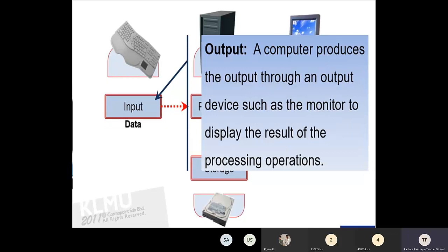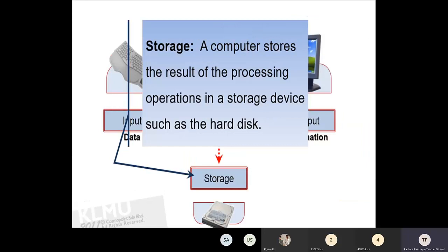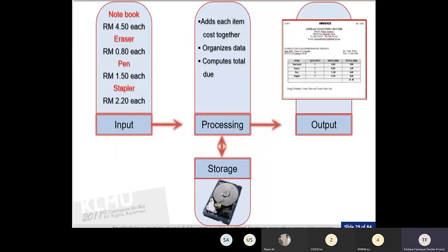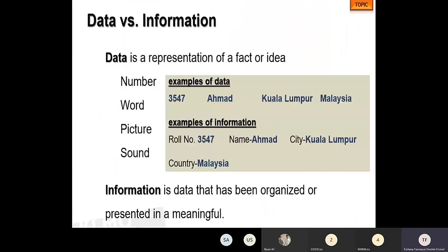Output is the processed data — the information we get after processing — and it can be received with the help of output devices. Whatever data the computer gives us after processing is output, and whatever data we give to the computer before processing is input. Storage means that after getting a result, if you want to save it for future use, it can be stored in storage devices. There are many storage devices available, like hard disks, USB memory sticks, Blu-ray discs, CDs, and DVDs.